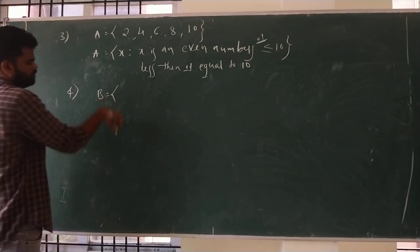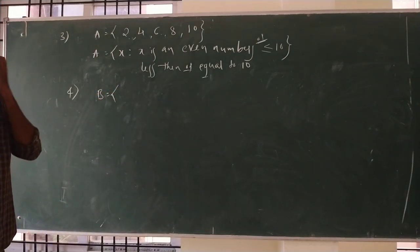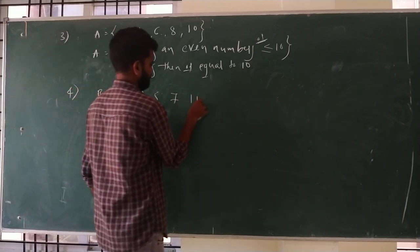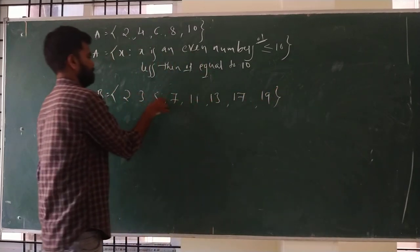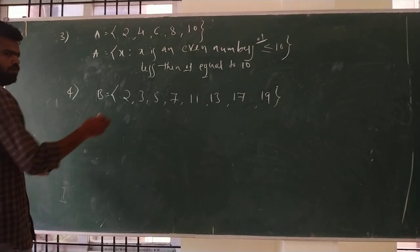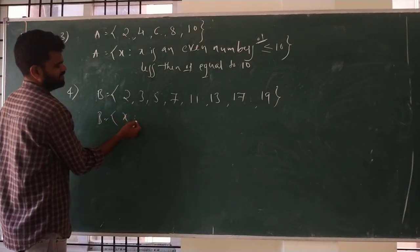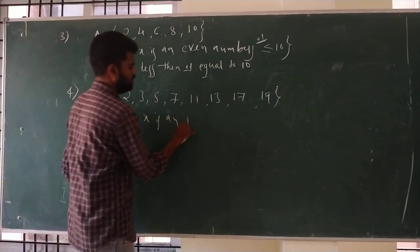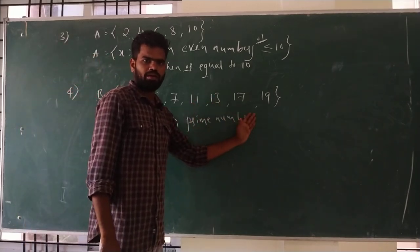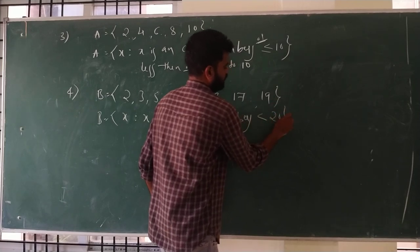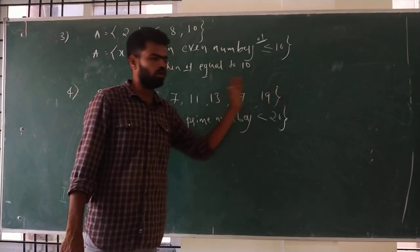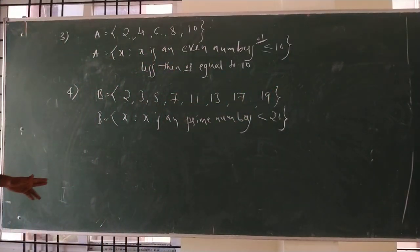Fourth example: B = {2, 3, 5, 7, 11, 13, 17, 19}. These are prime numbers. In Set Builder form: B = {x : x is a prime number less than 20}. So x is a prime number less than 20.